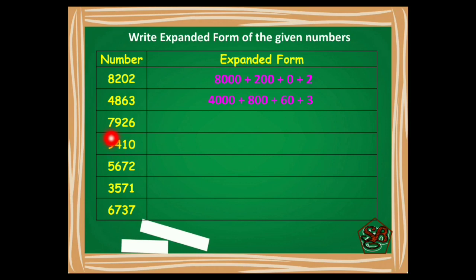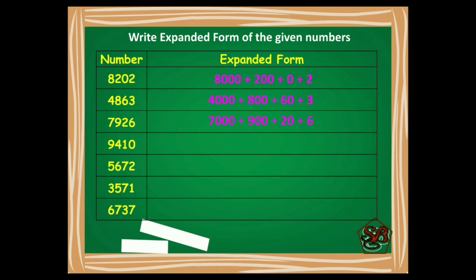Next example: 7926. 6 is at ones place, 2 is at tens place, 9 is at hundreds place and 7 is at thousands place. So starting from 7, we will write it as 7000 plus 900 plus 20 plus 6. Next, 9410 will be written as 9000 plus 400 plus 10 plus 0.